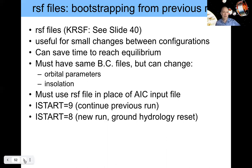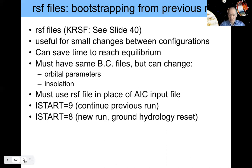You use RSF files in place of the AIC input file — a bit strange but a legacy mechanism we're stuck with. The RSF file actually contains all initial conditions for your restart, including ocean temperatures, salinity, currents, and surface temperatures. To start a run with one of these RSF files in place of the AIC file, set I_START equal to 9 and the run continues from the previous run with your changes. In some places you might want to reset ground or lake hydrology to defaults — in that case use I_START equals 8 instead.